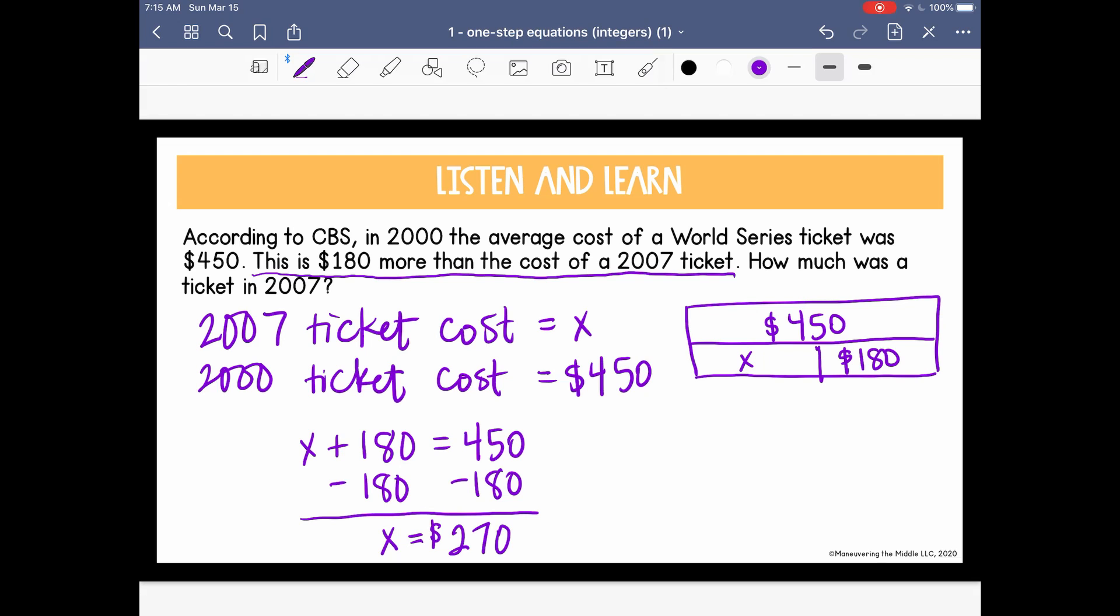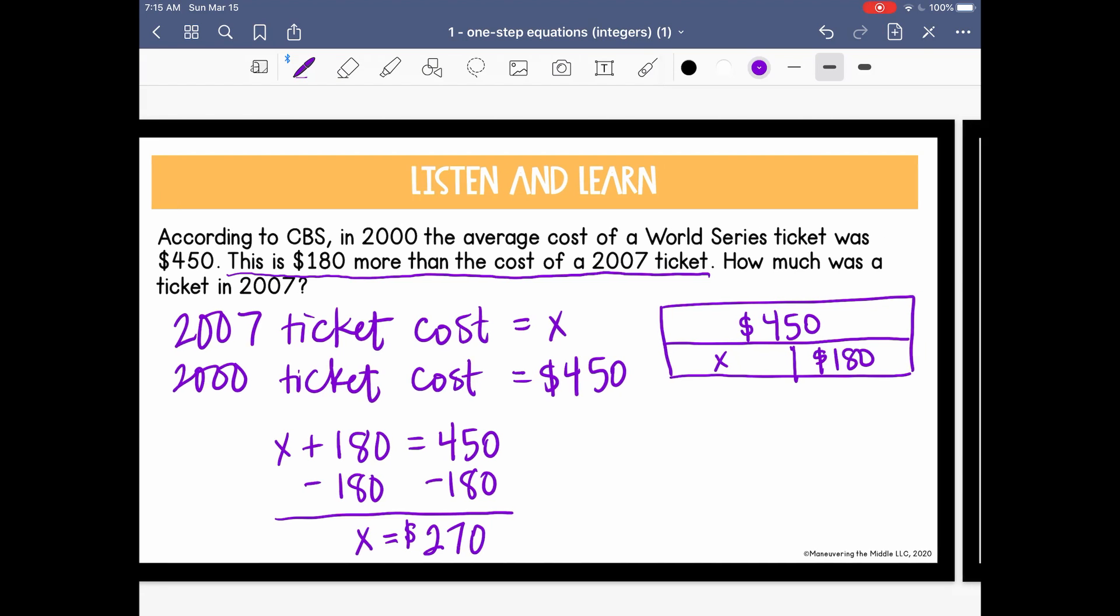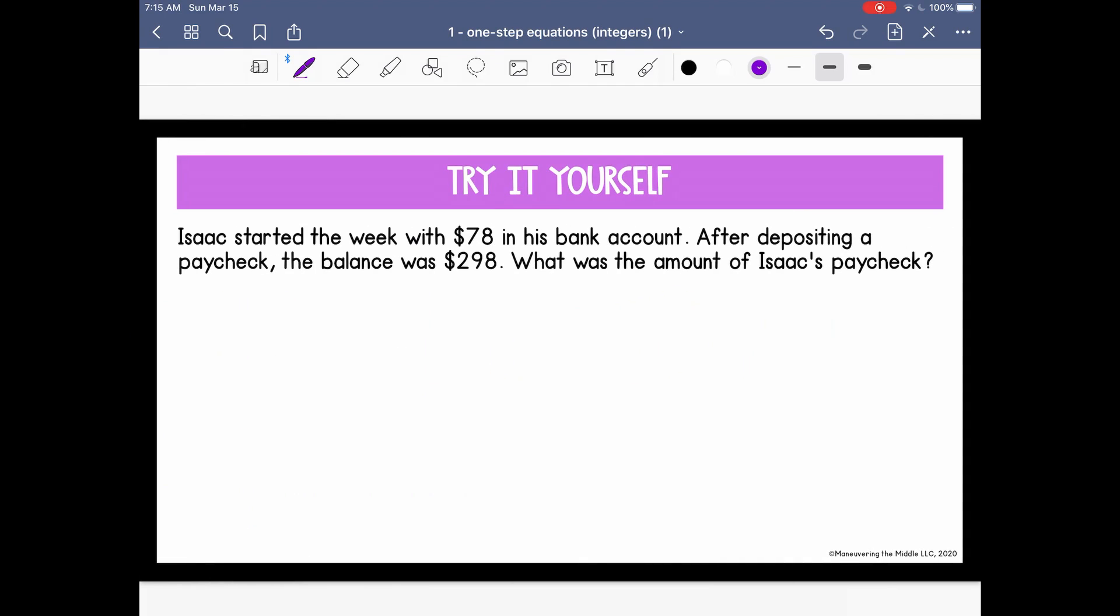Now I like to go back and think if it makes sense. Well, if the 2007 ticket is $270, does it make sense? Yes, because it's still less expensive than the 2000 ticket. Let's go ahead and look at the next one. I want you to try this one on your own, and then I'll talk you through it.